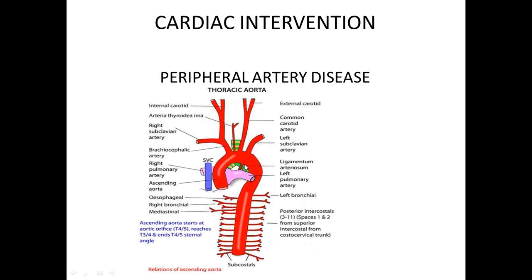When it comes to the aortic arch, you need to know the blood vessels that come off it. You have the aortic valve inside the heart, then the aortic root, the ascending aorta, and the aortic arch. The first blood vessel from the aortic arch is the brachiocephalic, which gives rise to your right subclavian and the right common carotid. The common carotid divides into an internal and an external carotid.